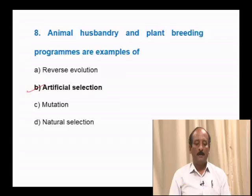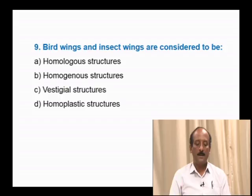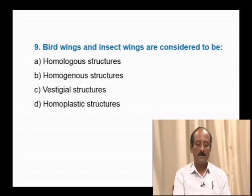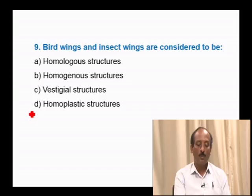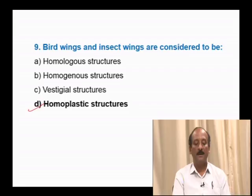Question number 9: Bird wings and insect wings are considered to be — homologous organs, homogeneous structures, vestigial structures, homoplastic structures. The wing of a bird and wing of an insect perform the same function but are different in structure and origin. Hence, they are analogous organs. Analogous organs are also called homoplastic organs. The correct answer is option D: homoplastic structures.